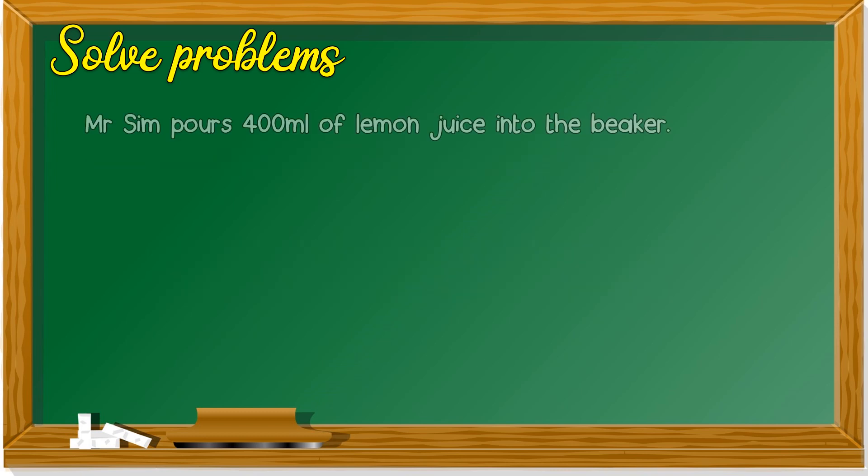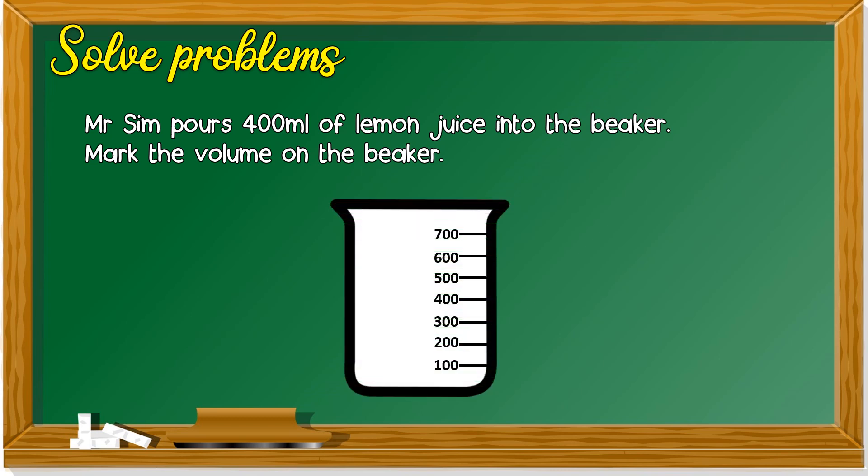Next question. Mr. Sim pours 400 ml of lemon juice into a beaker. Mark the volume on the beaker. Mark, tanda. This is a beaker. How much did Mr. Sim pour? So how do we mark 400 ml of lemon juice? It's here, 400 ml of lemon juice.